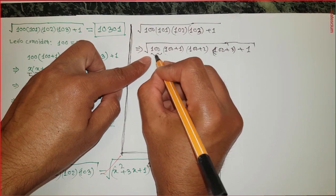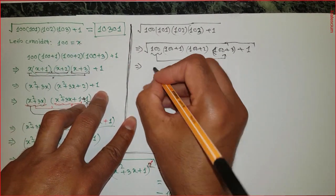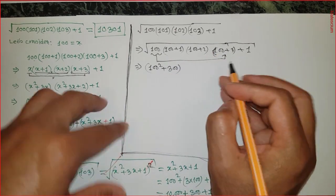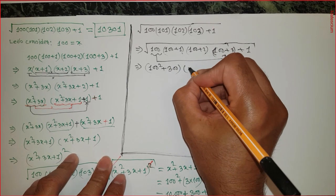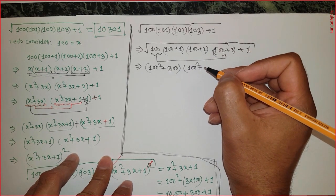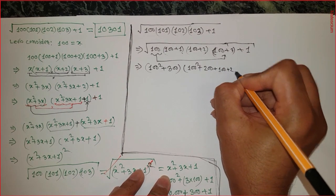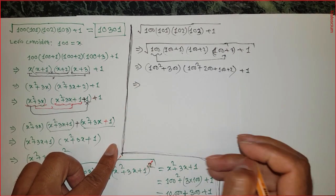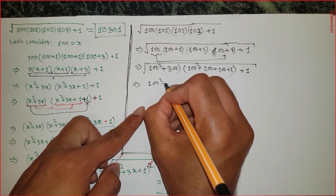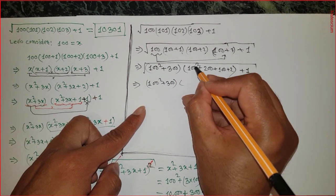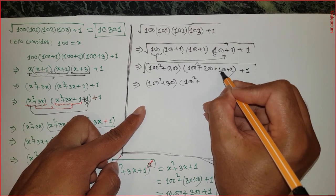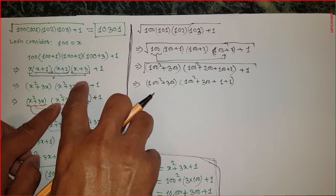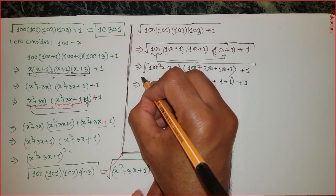Now multiply 100 by 100 plus 3: 100 times 100 is 100 squared, and 100 times 3 is 300, giving 100 squared plus 300. Then multiply 100 plus 1 by 100 plus 2, giving 100 squared plus 200 plus 100 plus 2, which simplifies to 100 squared plus 300 plus 2. Now split the 2 into 1 plus 1, just like before.